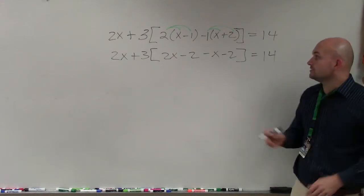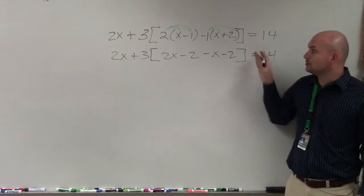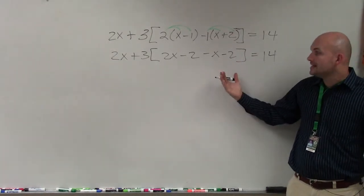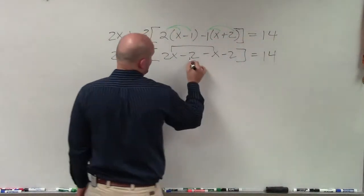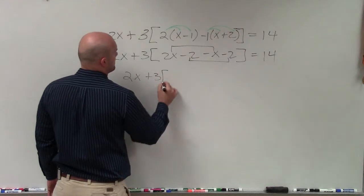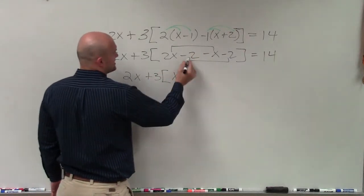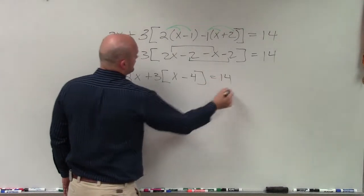Now the next thing I'll do is, and I'll again go back to order of operations, look inside this parentheses. Can I simplify inside here? Yeah, I can combine my like terms, right? I have my 2x and negative x and negative 2 and negative 2. So then I have 2x plus 3. 2x minus x is just x. Negative 2 minus 2 is negative 4 equals 14.